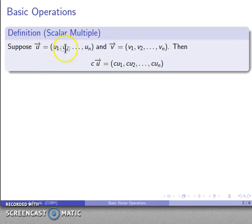For example, suppose I have a vector u and I have a bunch of components, and for future reference, I have some other vector v with its own set of components. Then I can define the scalar multiple of a vector c times u, and I'm going to define that as c times each of the components.